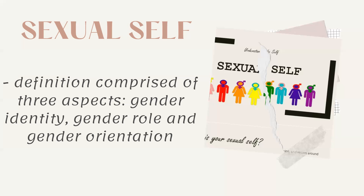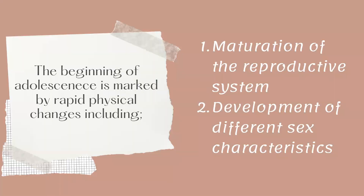When a person enters adolescence, it marks the beginning of that stage. The beginning of adolescence is marked by rapid physical changes, including the maturation of the reproductive system. This means the body is ready to bear a child, to procreate for reproduction.